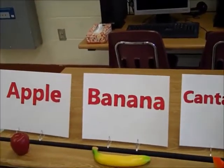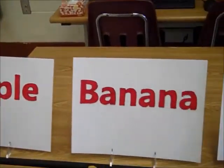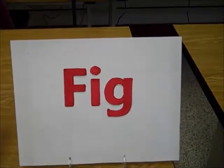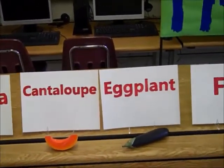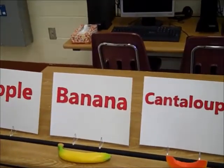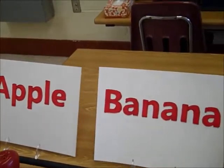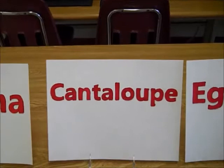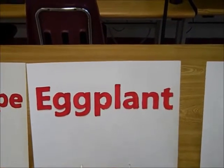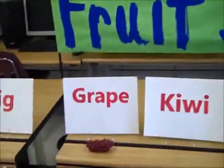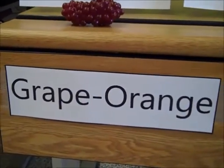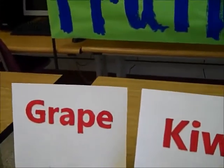Apple starts with A, so it is first. Fig starts with F, so it is last at this table. The first letters in between A and F are in alphabetical order — A comes first, then B for banana, C for cantaloupe, E for eggplant, and then fig. If someone wants a grape, they go to the next table — grape through orange — with grape first, orange last, and all letters between G and O in between.